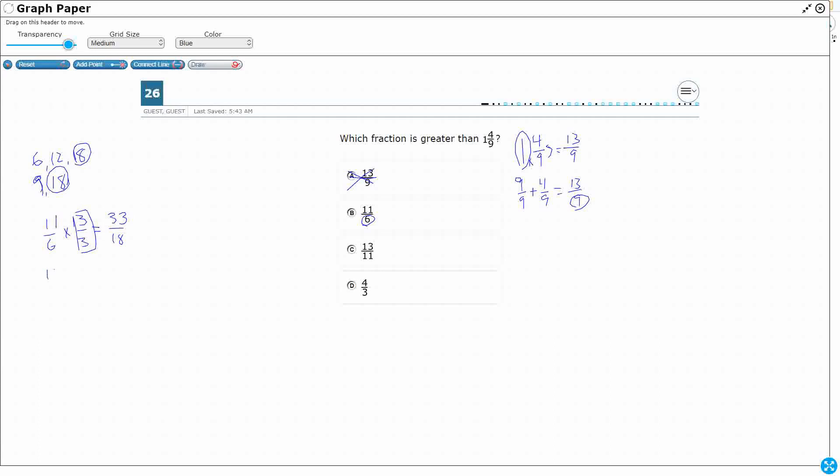Let's do the same thing with my 13 ninths. 13 ninths times something is going to get me 18. It's going to be 2. So that's 2. 26. Hey, look, 33 eighteenths is greater than 26 eighteenths, which means this one is greater. So I'm thinking, thinking it's that one. But let's double check.